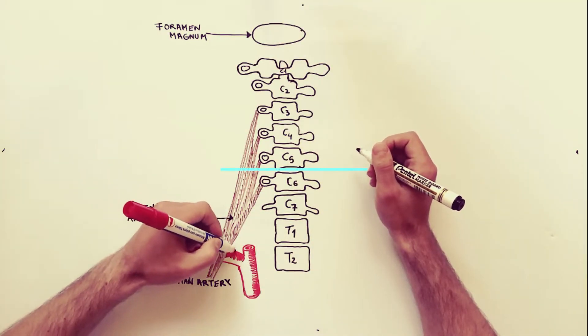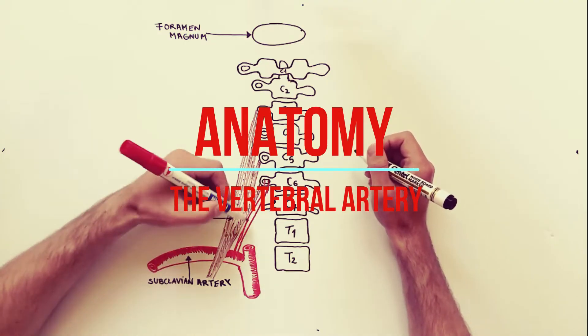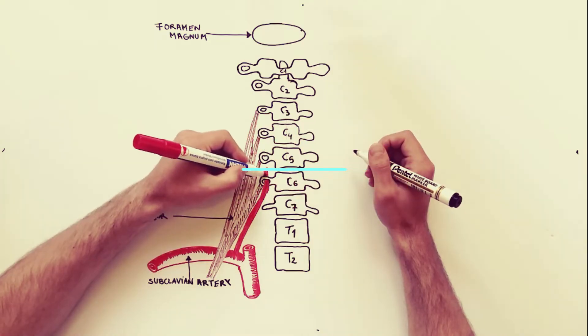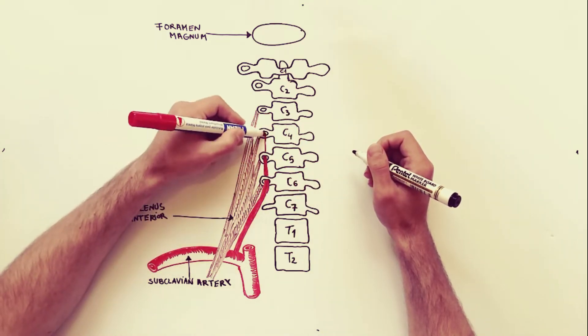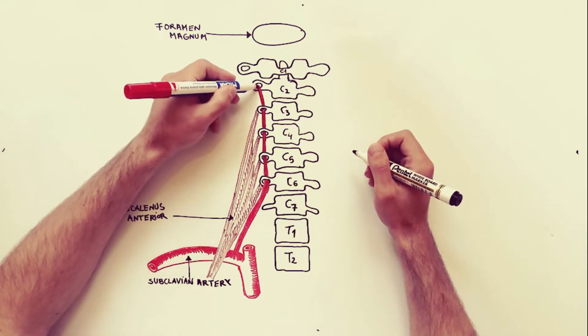Today we will discuss about the vertebral artery. The vertebral artery arises from the upper aspect of the first part of the subclavian artery. It runs vertically upwards to enter the foramen transversarium of the transverse process of C6.